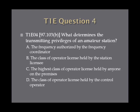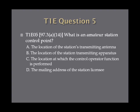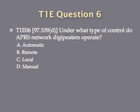Question 4: What determines the transmitting privileges of an amateur station? A, the frequency authorized by the frequency coordinator. B, the class of operator license held by the station licensee. C, the highest class of operator license held by anyone on the premises. Or D, the class of operator license held by the control operator. Question 5: What is an amateur station control point? A, the location of the station's transmitting antenna. B, the location of the station transmitting apparatus. C, the location at which the control operator function is performed. Or D, the mailing address of the station licensee. Question 6: Under what type of control do APRS network digipeaters operate? A, automatic. B, remote. C, local. Or D, manual.